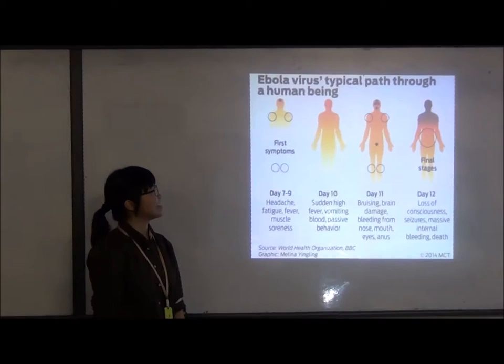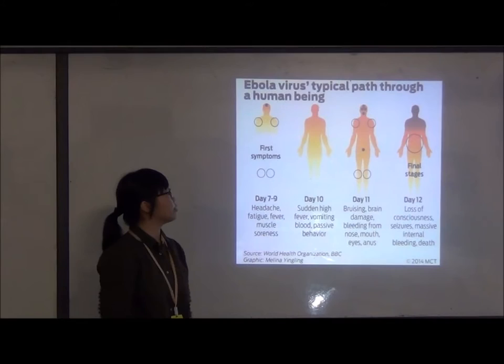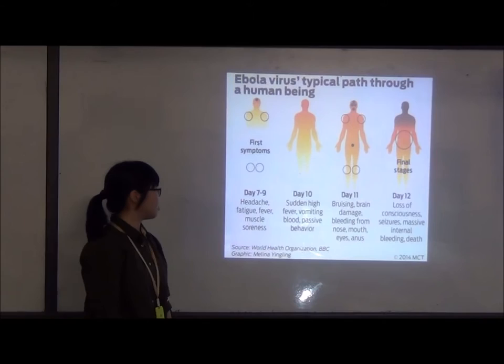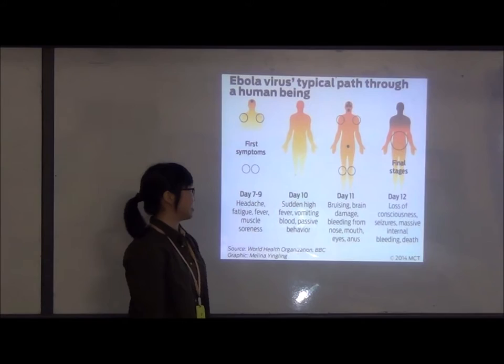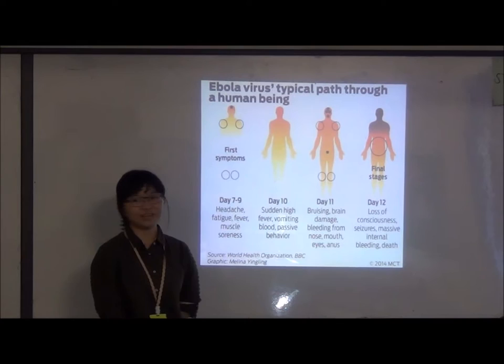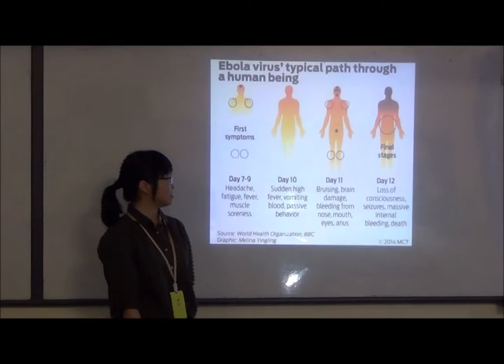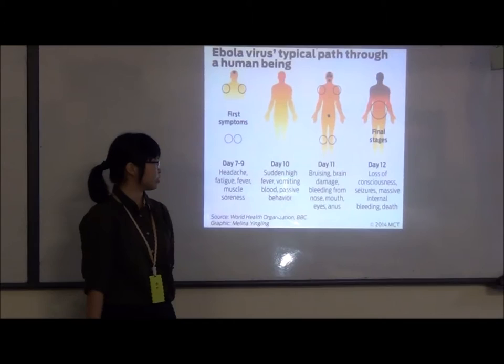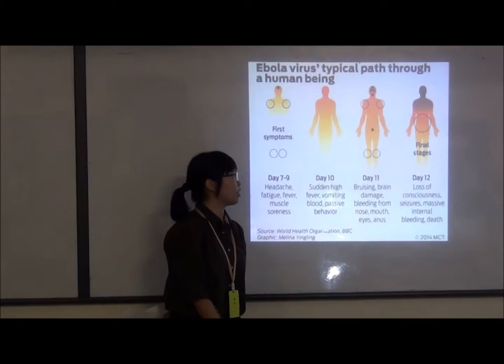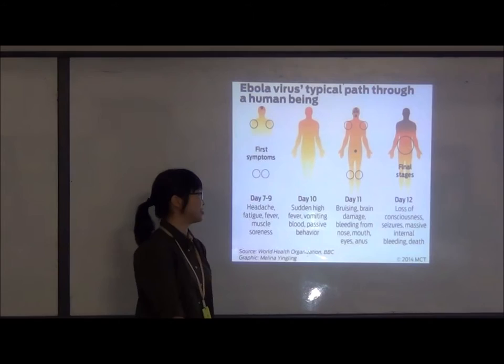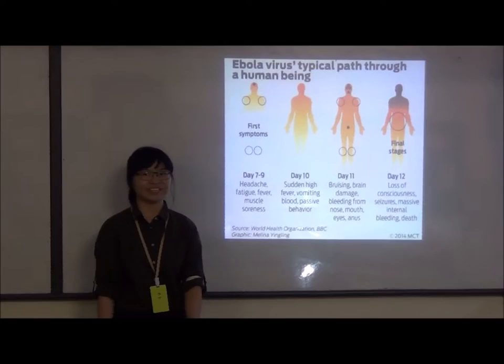Symptoms of Ebola include fever, fatigue, diarrhea, vomiting, and hemorrhaging — meaning bleeding. The disease progresses over days 7 to 9 with high fever and muscle pain, and by day 11 the patient may develop brain damage and bleeding from the nose, tongue, and eyes. Final stages include loss of consciousness, seizures, and internal bleeding.